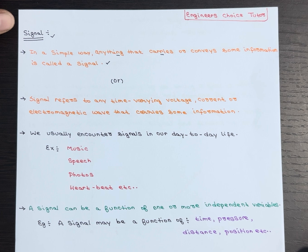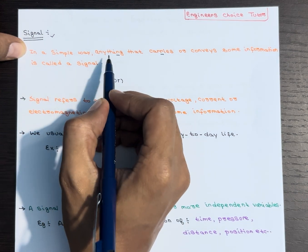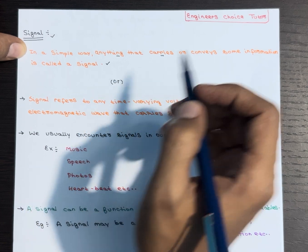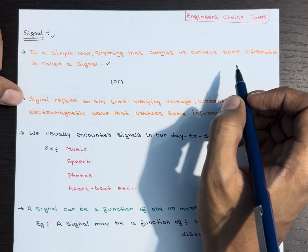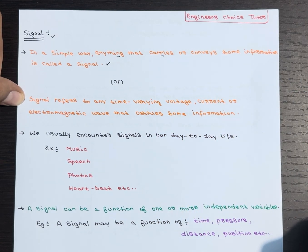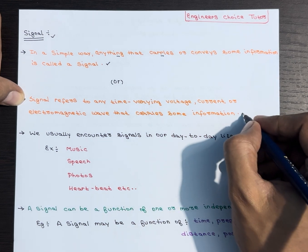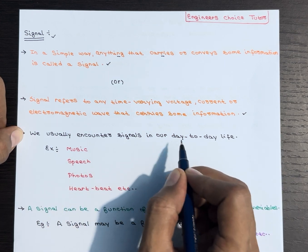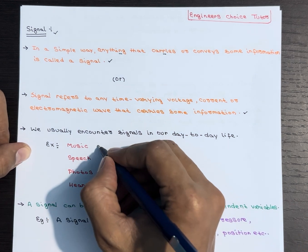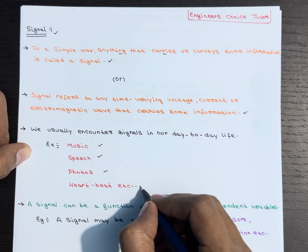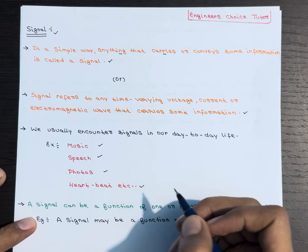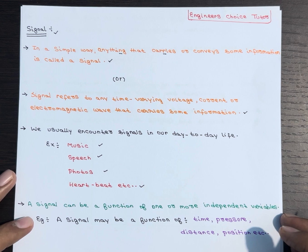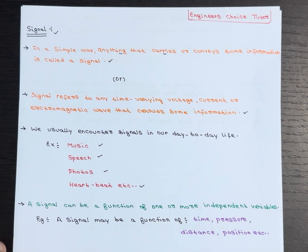How would you define signals? In a simple way, anything that carries or conveys some information is called a signal. When we talk about a signal, we are referring to any voltage, current, or electromagnetic wave that changes over time and carries some sort of information. We usually encounter signals in our day-to-day life — for example, music, speech, photos, heartbeat — these are all kinds of signals because they carry or convey some information.